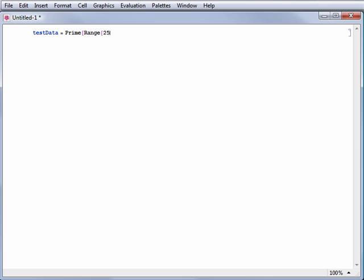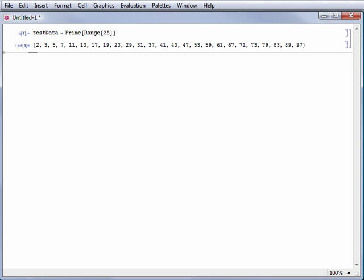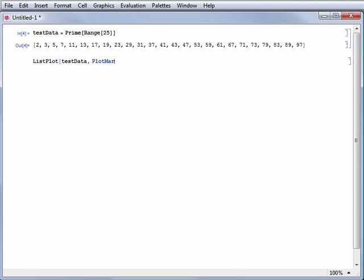First, define some data to plot. Use ListPlot and PlotMarkers to plot the data with an asterisk for data points.